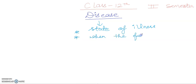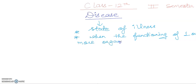When the functioning of one or more organs or systems of the body is adversely affected, this is characterized by various signs and symptoms. When we are not healthy, it means we are in a diseased condition.